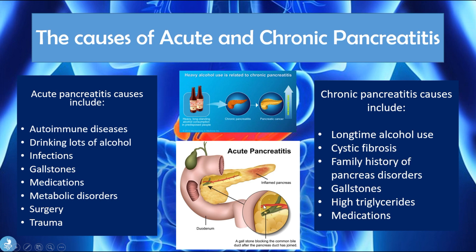For example, a gallstone can block the common bile duct after the pancreatic duct has joined, inhibiting proper drainage so that fluid pools and leads to pancreatitis. Similarly, infections, medications, or autoimmune attacks that block the drainage ducts can also contribute to acute pancreatitis.